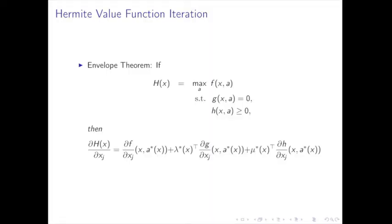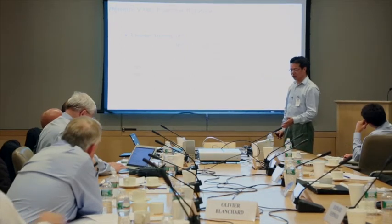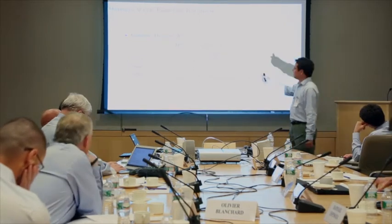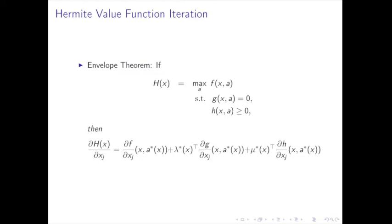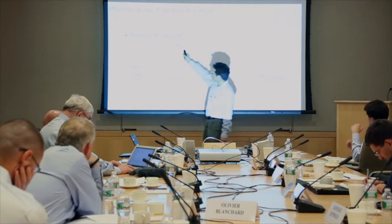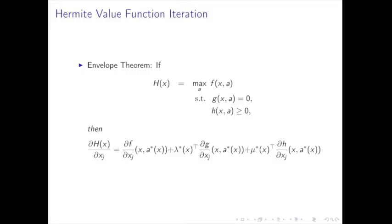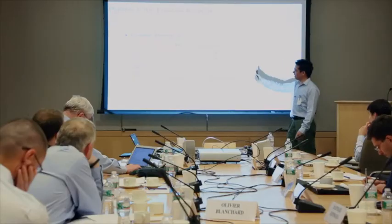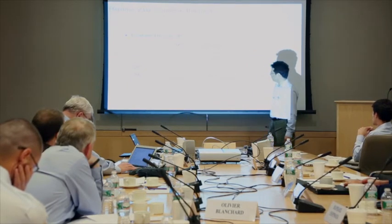After taking care of shape preservation, the value function is no longer oscillating too much. We can then improve the algorithm efficiently by using Hermite information. This uses the envelope theorem: X is a state variable in a maximization problem with some constraints. The envelope theorem tells us the gradient of the value function H equals a formula involving the Lagrange multipliers lambda-star for constraint G and mu for constraint H.